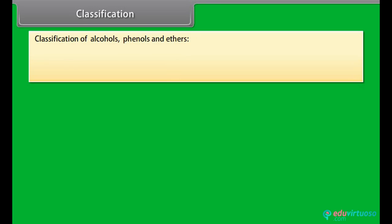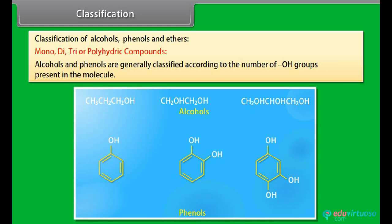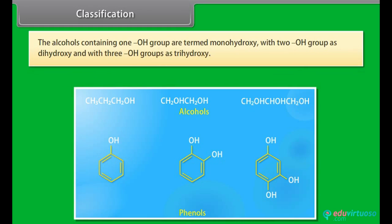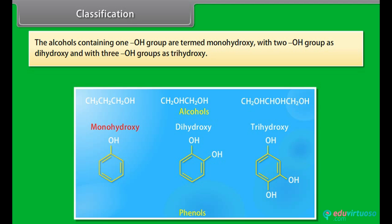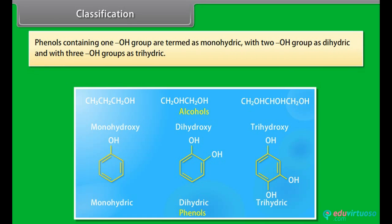Classification of alcohols, phenols and ethers — mono, di, tri or polyhydric compounds. Alcohols and phenols are generally classified according to the number of hydroxyl groups present in the molecule. Alcohols containing one hydroxyl group are termed monohydroxy, with two hydroxyl groups as dihydroxy, and with three hydroxyl groups as trihydroxy. Phenols containing one hydroxyl group are termed monohydric, with two as dihydric, and with three as trihydric.